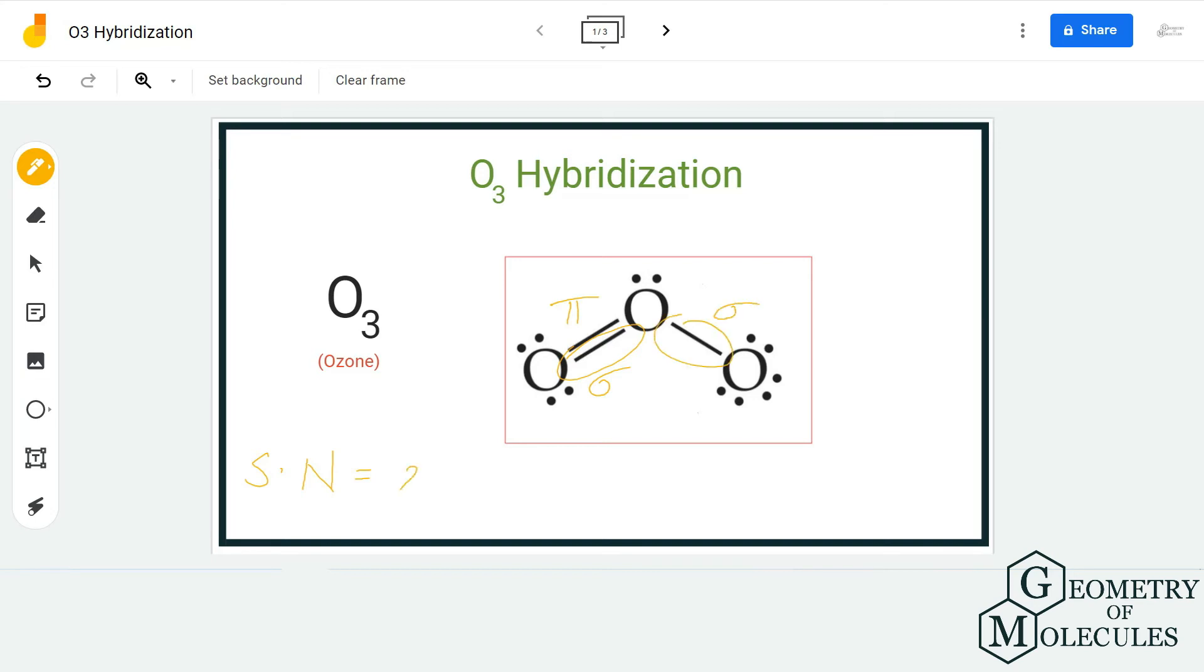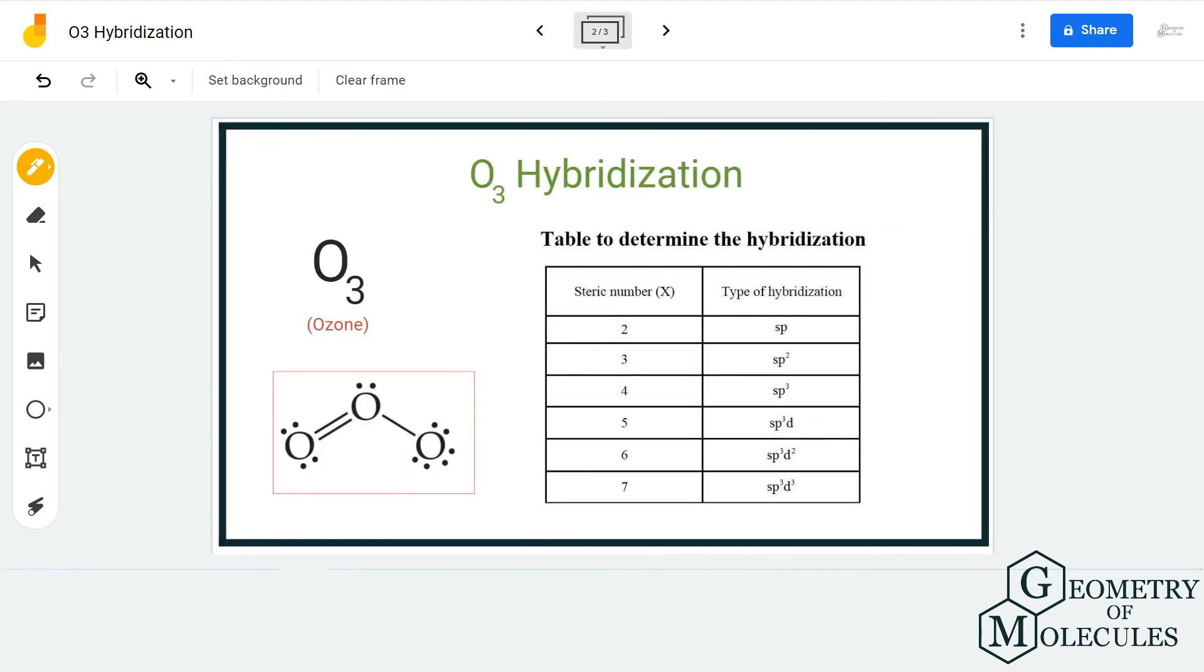sigma bond and hence there are two sigma bonds. Besides that, we have one lone pair of electrons on the central atom, so we are going to consider that. Hence the steric number is three for this ozone molecule. Now